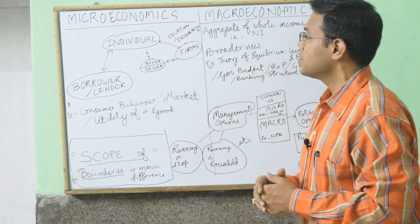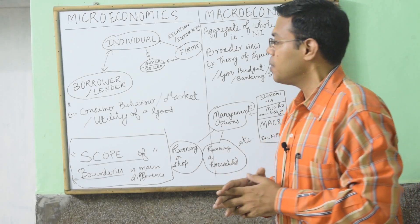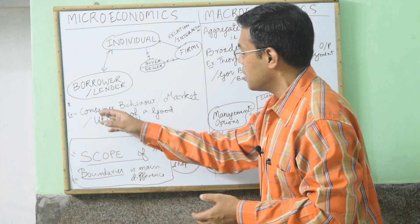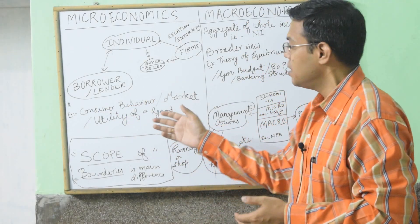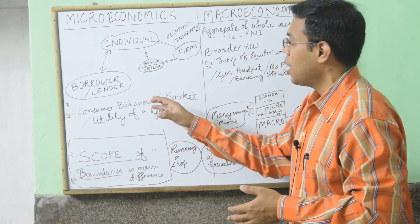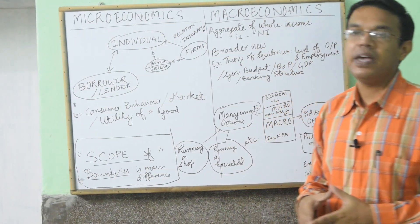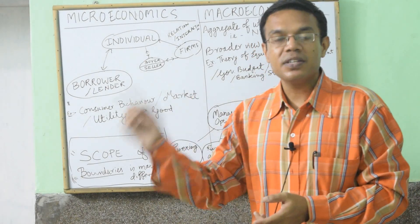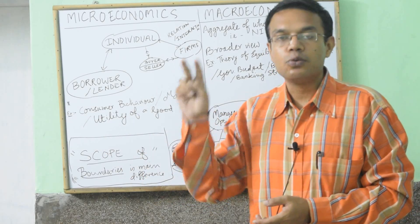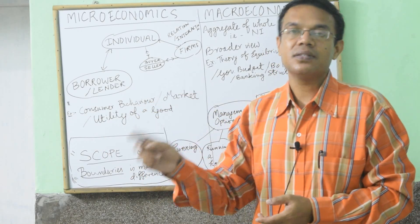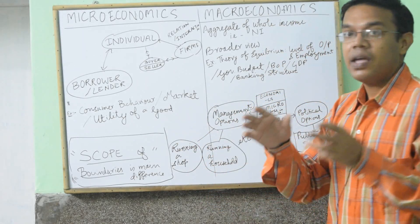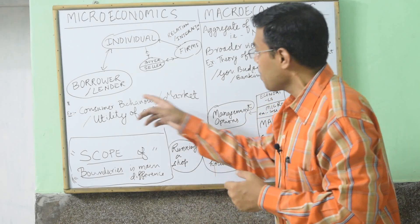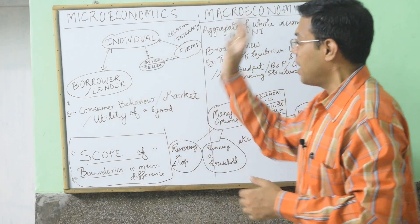Microeconomics, as a topic of economics, deals with the following topics. First is consumer behavior — how a consumer behaves in a predefined, standard, regulated market. Market has been defined with the two forces of demand and supply. In between these two forces, how a consumer behaves — that is what we study as consumer behavior in microeconomics.